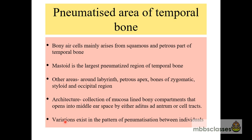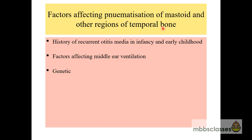Pneumatization is not similar in all individuals. The factors which affect pneumatization of the mastoid and temporal bone — explaining why the mastoid is not similar in all individuals — include a history of recurrent otitis media in infancy and early childhood, factors affecting middle ear ventilation such as enlarged adenoids, Eustachian tube dysfunction, and lastly, genetics.